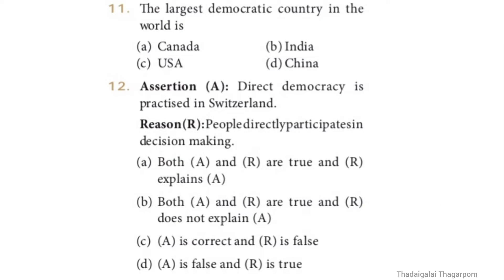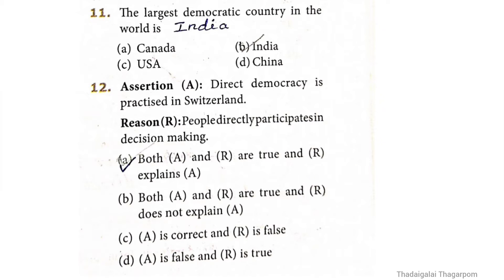Eleventh question: the largest democratic country in the world is India - option B. Twelfth question: assertion - direct democracy is practiced in Switzerland; reason - people directly participate in decision making. The correct answer is option A: both assertion and reason are true, and the reason explains the assertion.